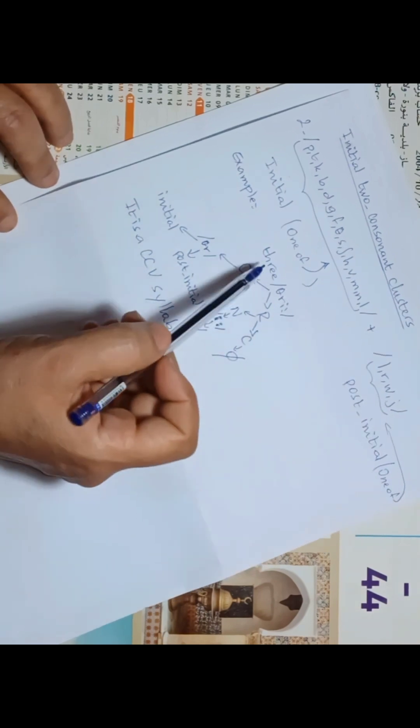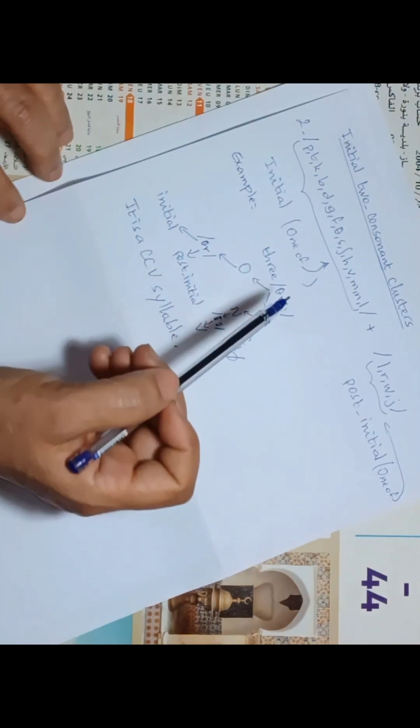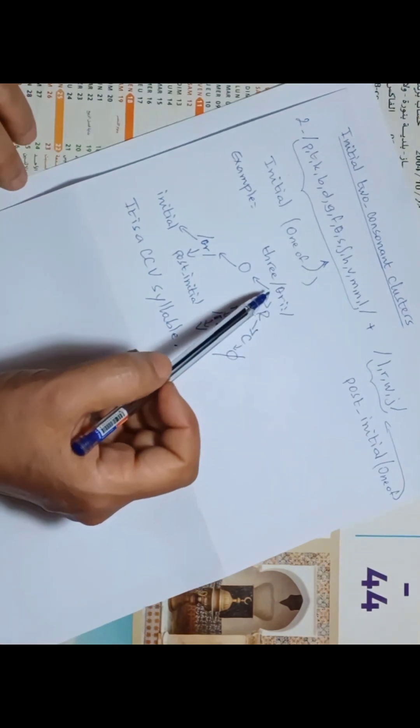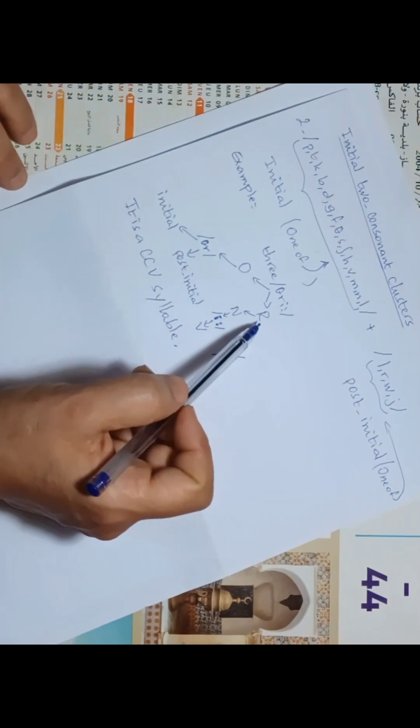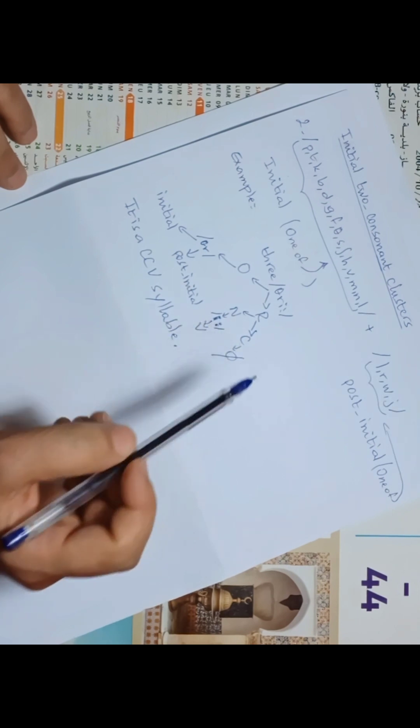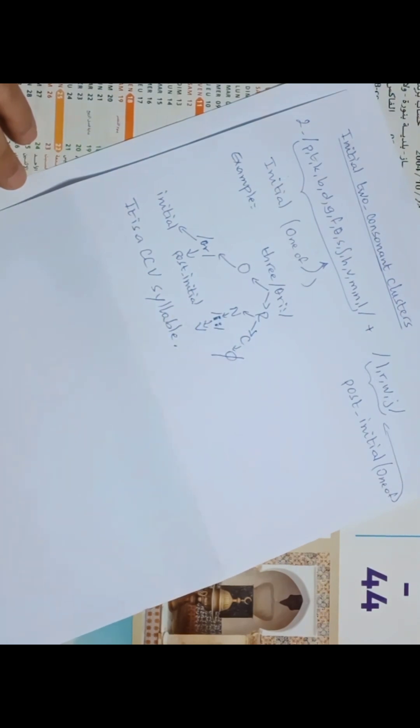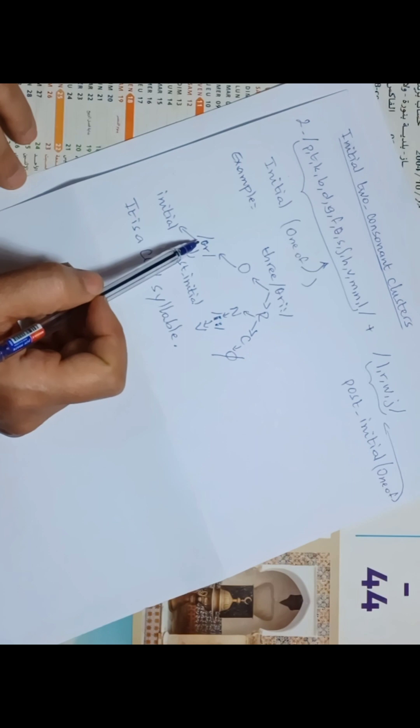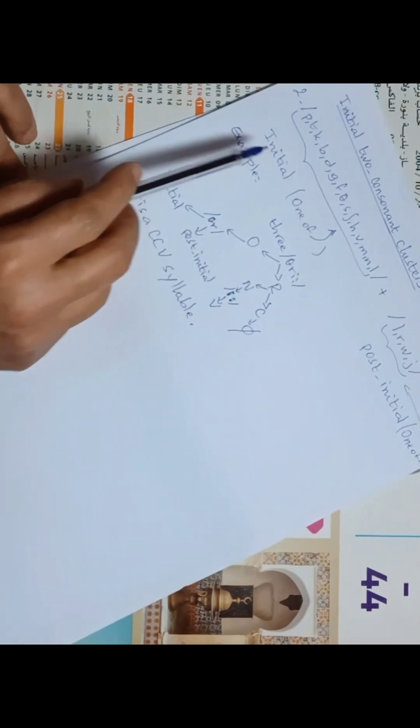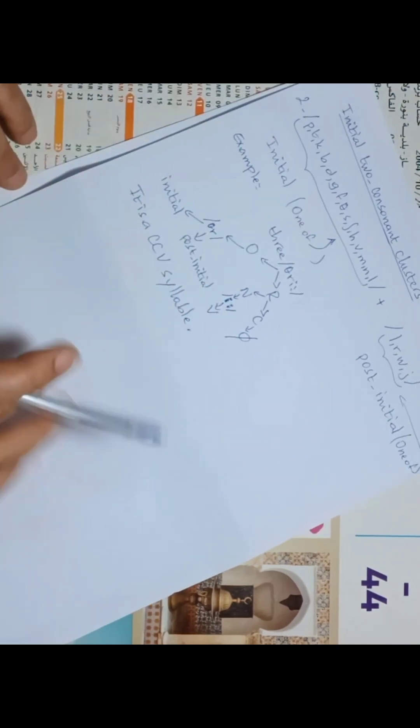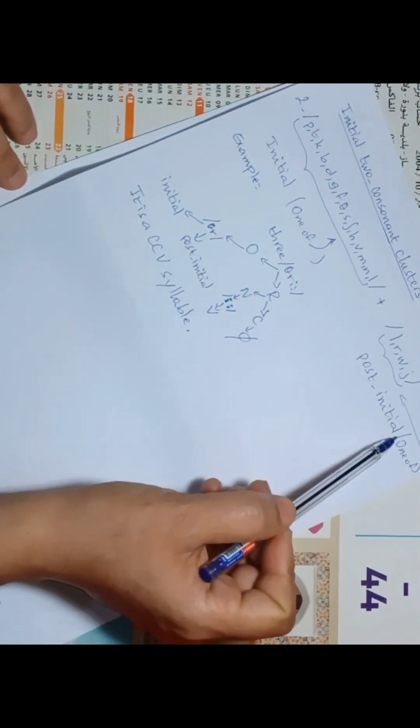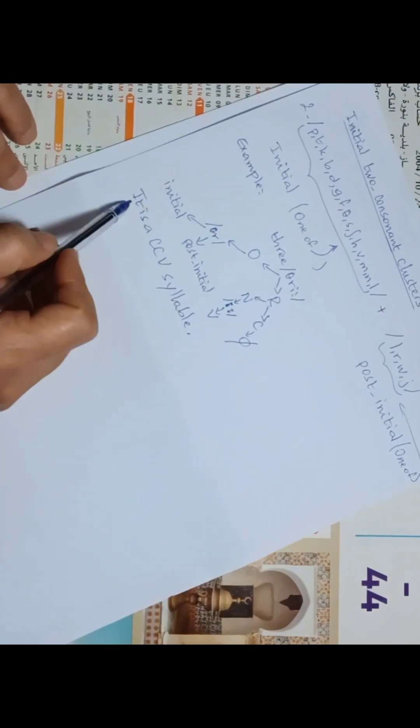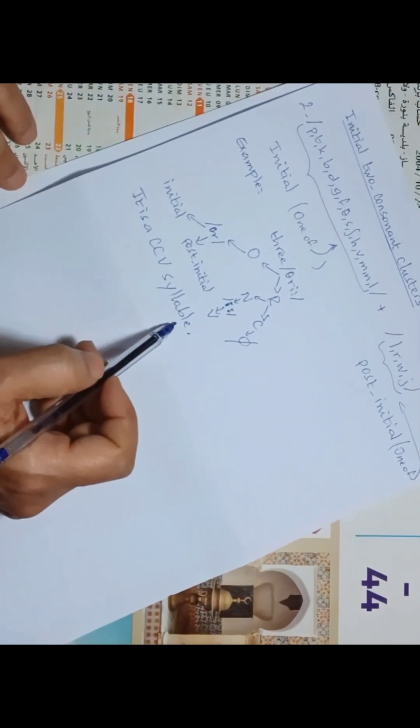Let's take an example: the word 'three'. It is composed of one syllable, and the onset is composed of two consonant sounds, /θ/ and /r/. The rhyme is composed of the vowel sound /iː/ and zero coda. Here, /θ/ is called initial - one of these 15 sounds. And /r/ is post-initial - one of these four sounds. So it is a CCV syllable.